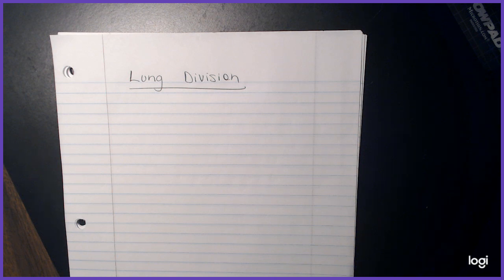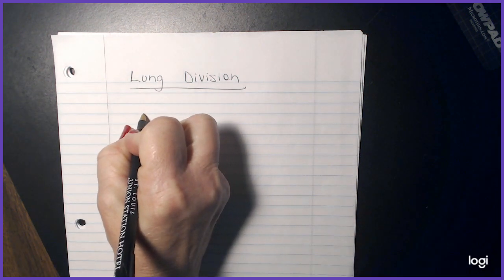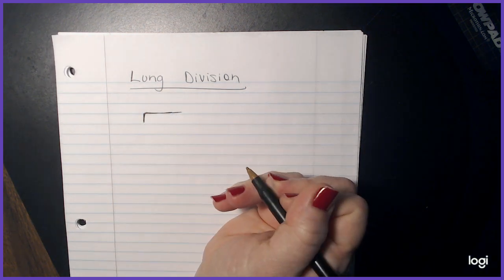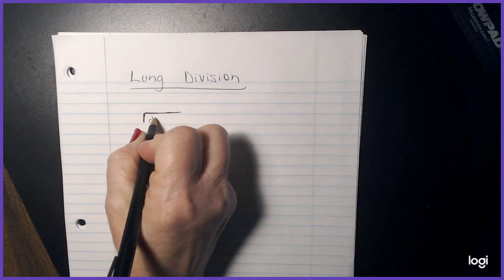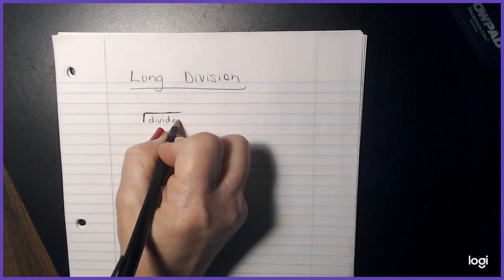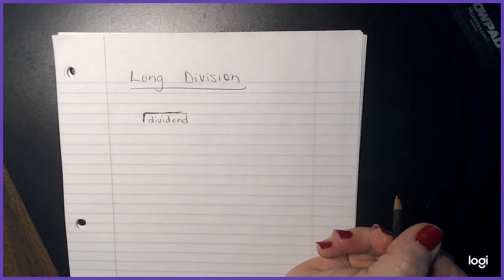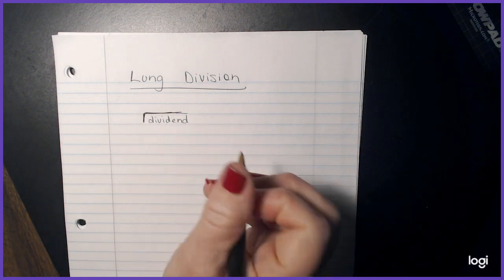In order to do long division, we have to understand the concepts or the names of the problems. Some of you have learned to call this a doghouse. When we make our division symbol like this, the number that's inside is called our dividend. And the number that's outside our division box here is called our divisor.